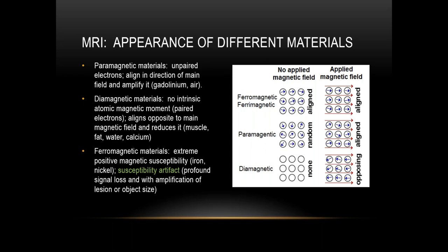Briefly, paramagnetic materials are comprised of unpaired electrons with alignment in the direction of the main magnetic field, amplified in the case of gadolinium and air. Diamagnetic materials have no intrinsic atomic magnetic moment, align opposite to the main magnetic field and reduce it — such as muscle, fat, water, and calcium. Ferromagnetic materials have an extreme positive magnetic susceptibility, such as iron or nickel, and result in susceptibility artifact with profound signal loss and magnification of the apparent size of the object.